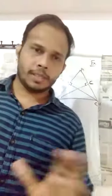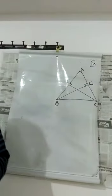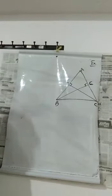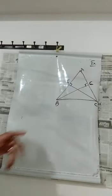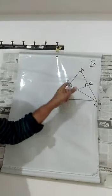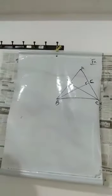Now we can discuss the third problem in the same exercise. ABC is an isosceles triangle in which the altitudes BE and CF are drawn to the equal sides AC and AB respectively. This is an important question — show that these altitudes are equal.